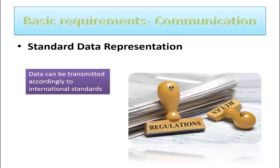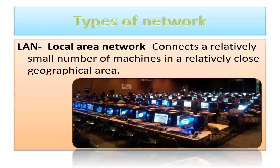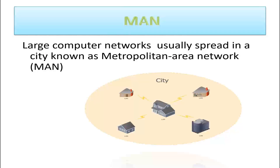Now, moving on next, let us see what are the different types of networks. All the types of networks can be divided into four main categories. First is LAN, also known as local area network. This connects a relatively small number of machines in a relatively close geographical area, usually within two kilometers. Second is MAN, which is a metropolitan area network. They are large computer networks usually spread in a city, making up the communication infrastructures developed in and around large cities.